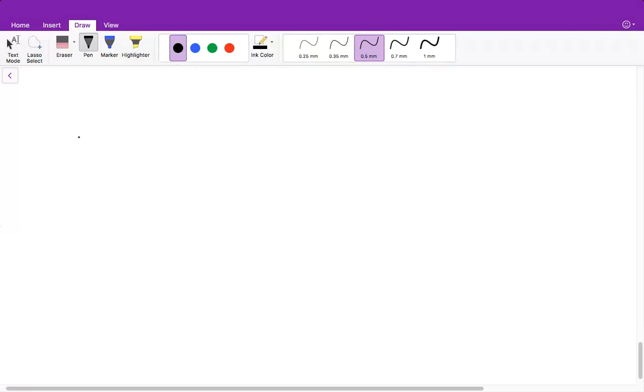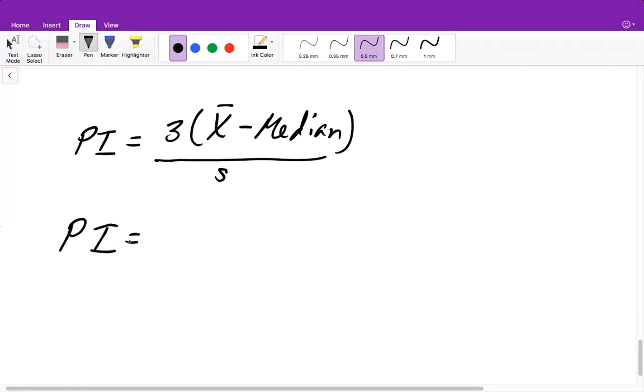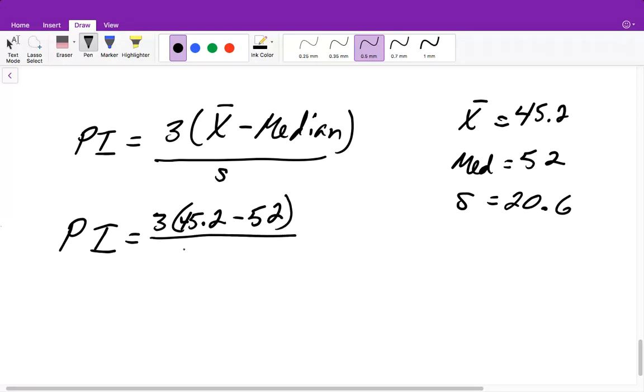So it's a formula that you will be given. Your PI equals 3 times X minus your median. Remember, X in this case is your average. All divided by your sample standard deviation. So now let's go ahead and plug this into your calculator. So our X was 45.2, our average is 45.2. Our median is 52. Our standard deviation is 20.6. So then this will give us 45.2 minus 52, divided by the standard deviation of 20.6.